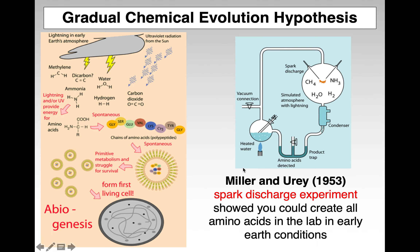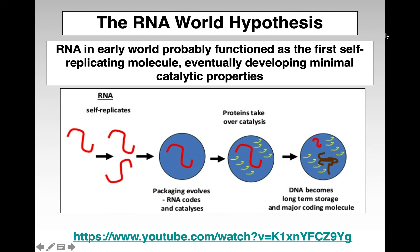There is some evidence for this theory through the Miller and Urey spark discharge experiment, which showed that you can recreate early earth conditions in a lab with a spark discharge to mimic lightning, and you can actually get amino acids out of that product. This is abiogenesis — forming life from non-life in very early earth conditions. It's thought that before DNA there was RNA, which is the RNA world hypothesis, showing that RNA was probably the first self-replicating molecule, which developed catalytic properties — the ability to modify molecules around it.